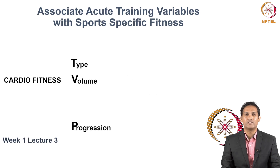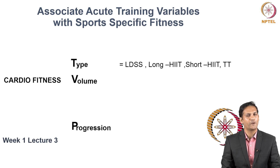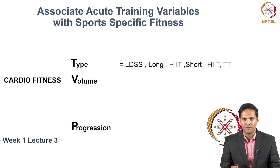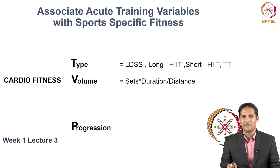Time is written in a similar way as you write for health specific fitness cardio improvement. Now let's see how you write type for sports specific cardio improvement. Type means the different type of stimulation you have to give to improve cardio fitness. With respect to cardio fitness these are: long distance slow speed, long HIIT, short HIIT, and an additional type of training called tempo training. TT stands for tempo training. This type of training is specifically used if your aim is to improve your cardio fitness to prepare for sporting events. Volume is expressed similarly as sets into duration or sets into distance, and progression can be written by increasing the volume, distance, and intensity.